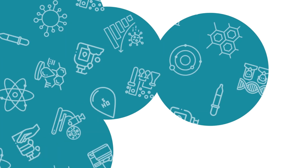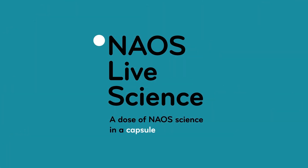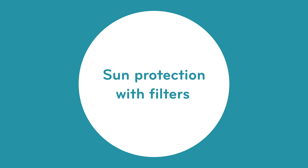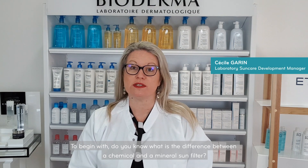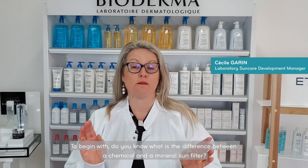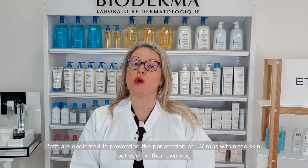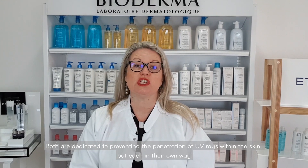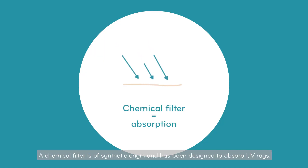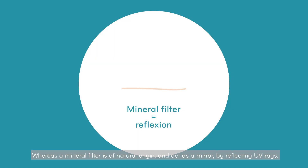You want to know more about it? To begin with, do you know what is the difference between a chemical and a mineral sun filter? Both are dedicated to preventing the penetration of UV rays within the skin, but each in their own way. A chemical filter is of synthetic origin and has been designed to absorb UV rays, whereas a mineral filter is of natural origin and acts as a mirror by reflecting UV rays.